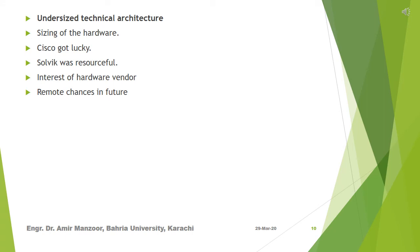Undersized Technical Architecture: the sizing of the hardware proved to be incorrect — much more hardware was required to process actual transaction volume. Cisco got lucky here in that they were able to hold the hardware vendor responsible for solving the problem. Solvik was resourceful in asking for a capability-based contract. The hardware vendor had a strong interest in leveraging Cisco's success into references and more business. That was the only reason that Cisco was able to solve the hardware requirement issue; otherwise it could have been a costly mess.